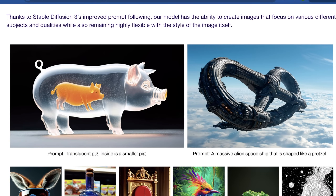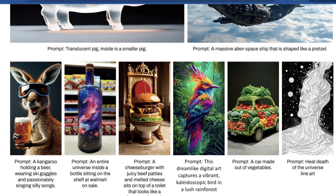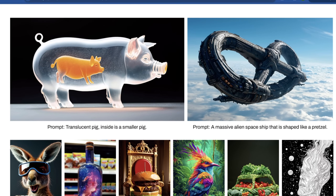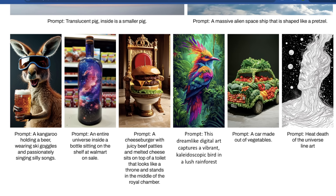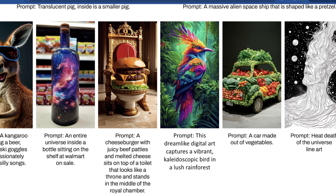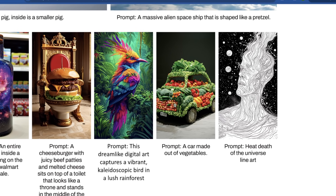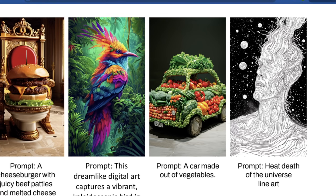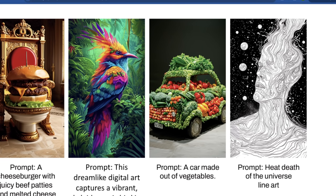Another really cool thing Stability AI is doing is expanding on prompt following. Their model has the ability to create images focused on various subjects and qualities while remaining highly flexible with the style of the image itself. Separating subject from attributes and aesthetics is something we've seen people manage to do with ComfyUI in really complex setups, so having this baked into the core logic of a model is exciting. There are example outputs like a kangaroo holding a beer with ski goggles, an entire universe inside a bottle, a cheeseburger sitting in a chair, and a car made of vegetables — these really show the model's prowess even with simple prompts.